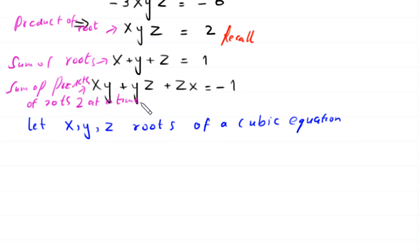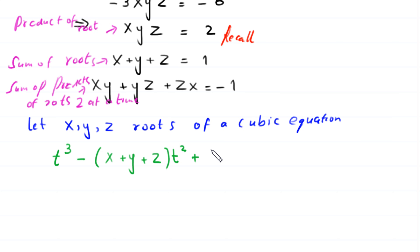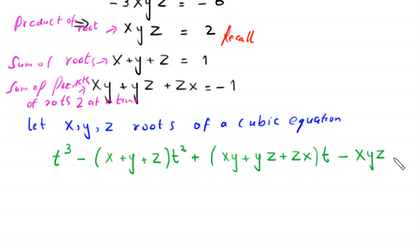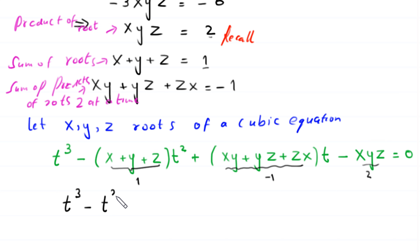By Vieta's formulas, the cubic equation is: t³ - (x+y+z)t² + (xy+yz+zx)t - xyz = 0. Replacing x+y+z with 1, xy+yz+zx with -1, and xyz with 2, this becomes t³ - t² - t - 2 = 0.